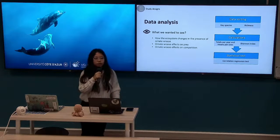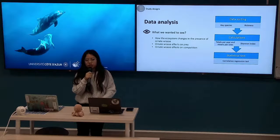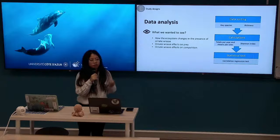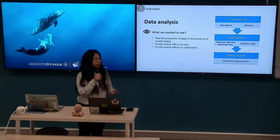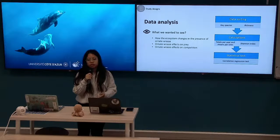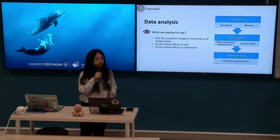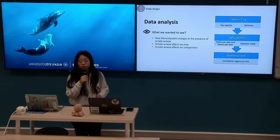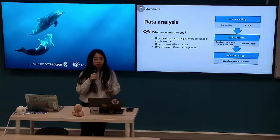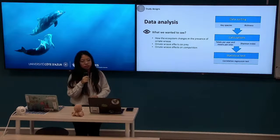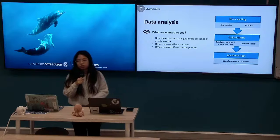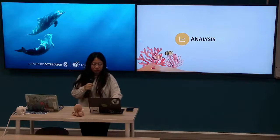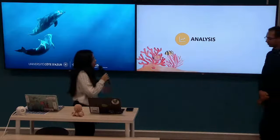Next, we analyzed the data. First, we sorted the data by key species: the Ornate Wrasse, Sea Urchins, Common Wrasse, and also richness. We then calculated totals per year and means per site, as well as the Shannon index. Finally, we performed statistical correlation and regression tests.